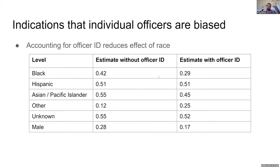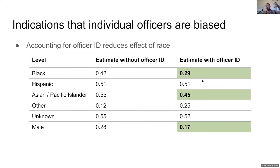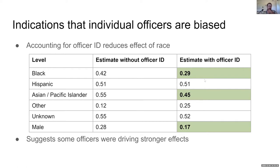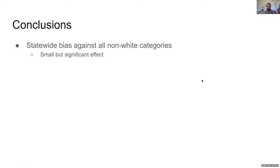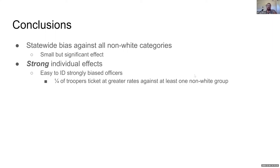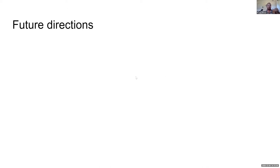There are indications that individual officer bias is driving racial effects. When I start accounting for individual officer ID, the magnitude of the effects on several races drops — those biased officers are being accounted for elsewhere in the model, reducing the magnitude of the overall effect. Conclusion: statewide bias against all non-white categories shows a very small but significant effect, which is highly problematic — everyone should have the same likelihood of getting a ticket. There are strong individual effects, and it's easy to identify biased officers statistically.